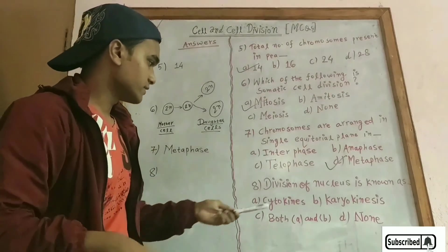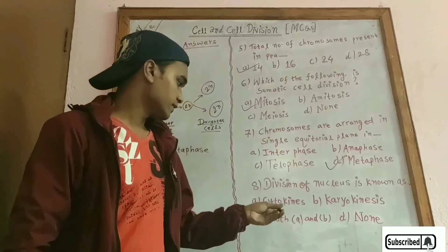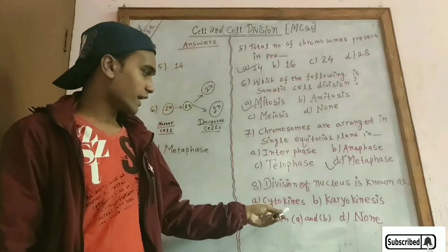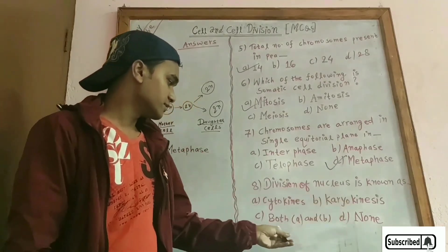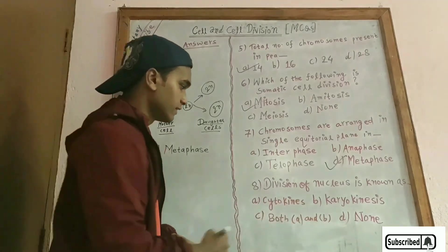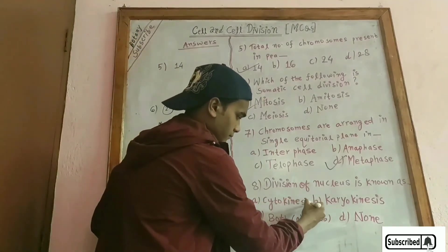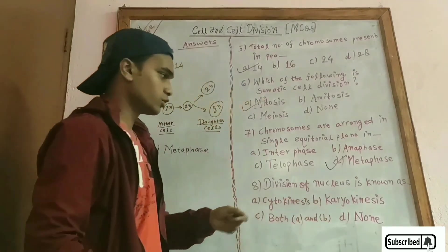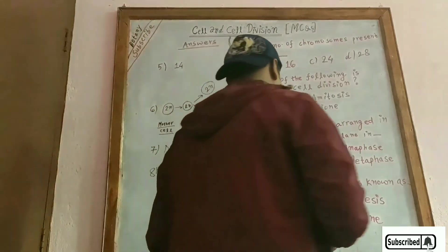Division of the nucleus is known as karyokinesis, while division of the cytoplasm is known as cytokinesis. Since division of the nucleus is called karyokinesis, that is the answer.